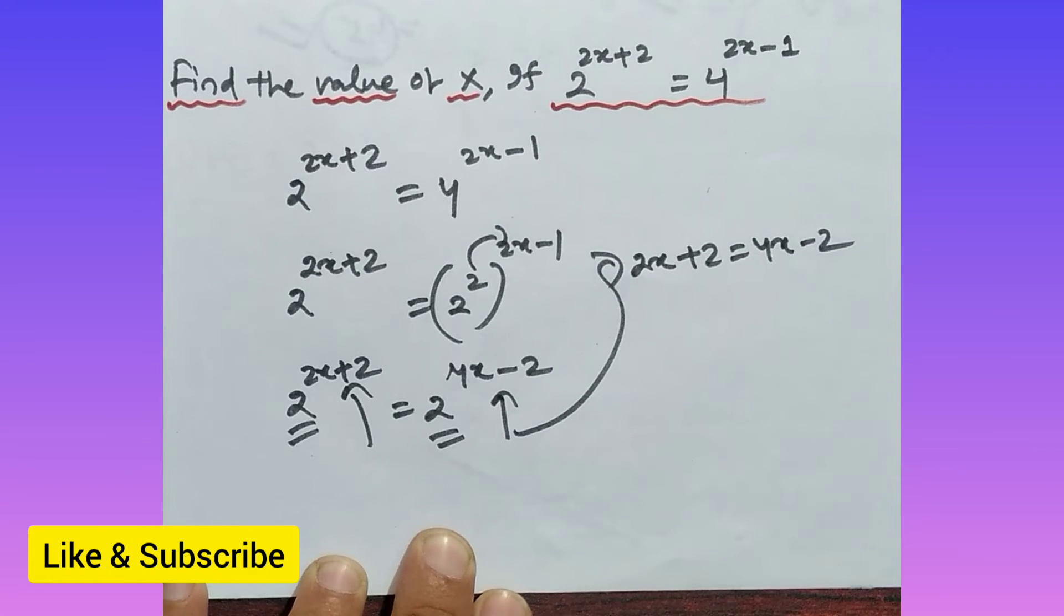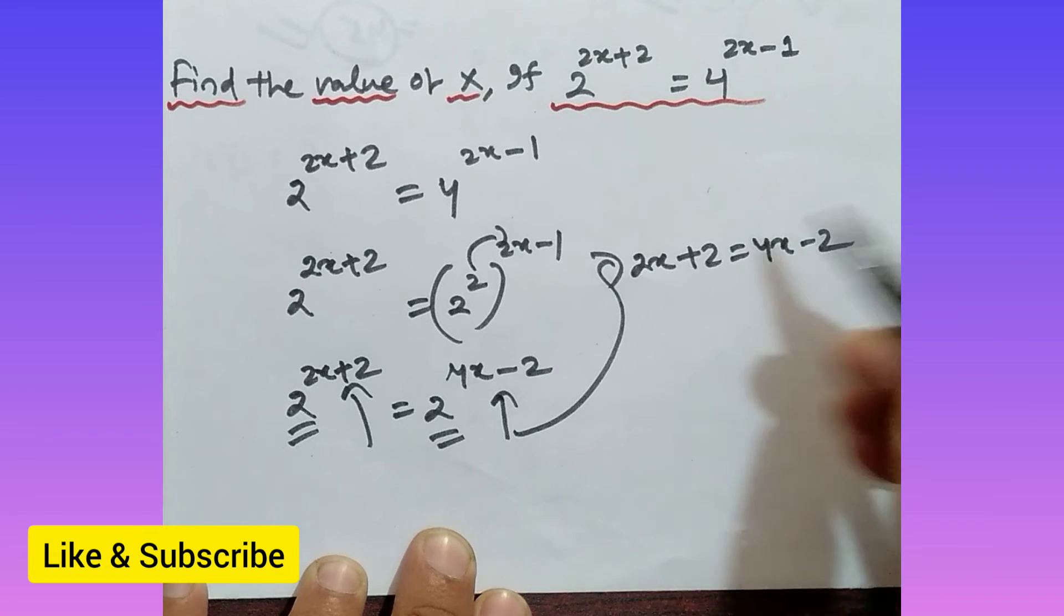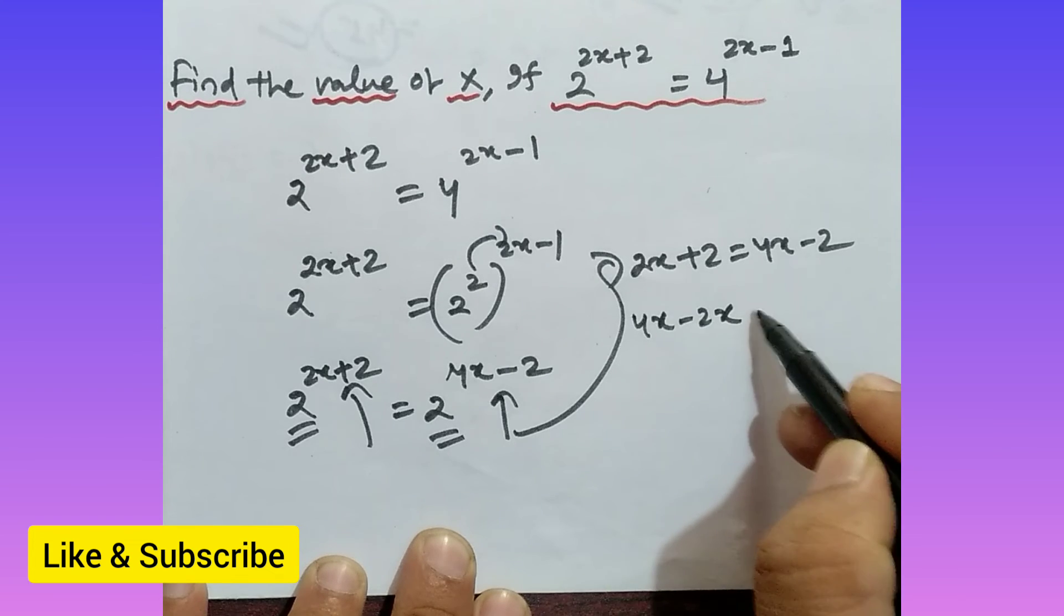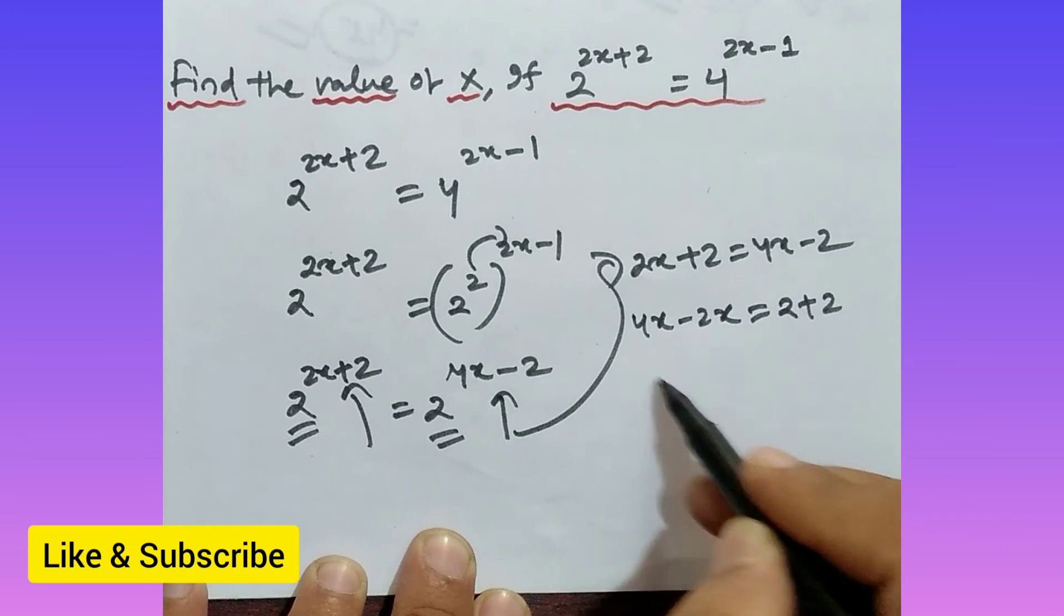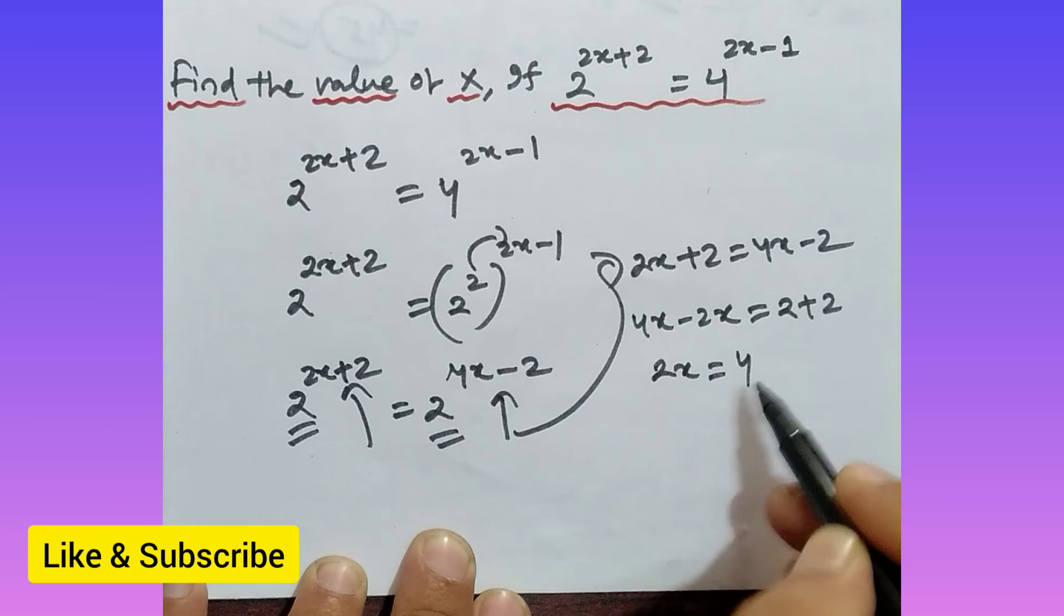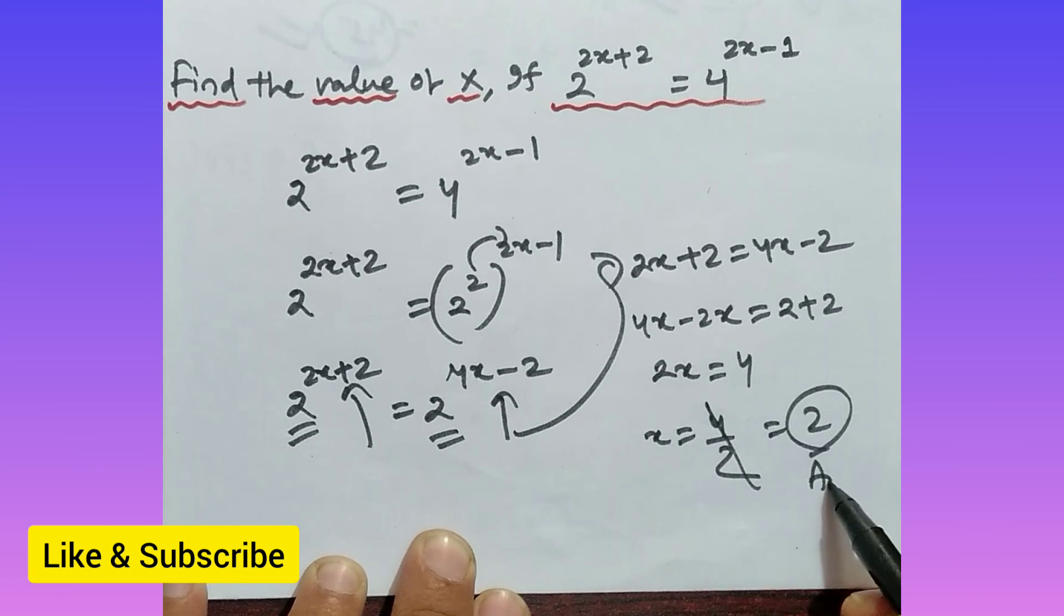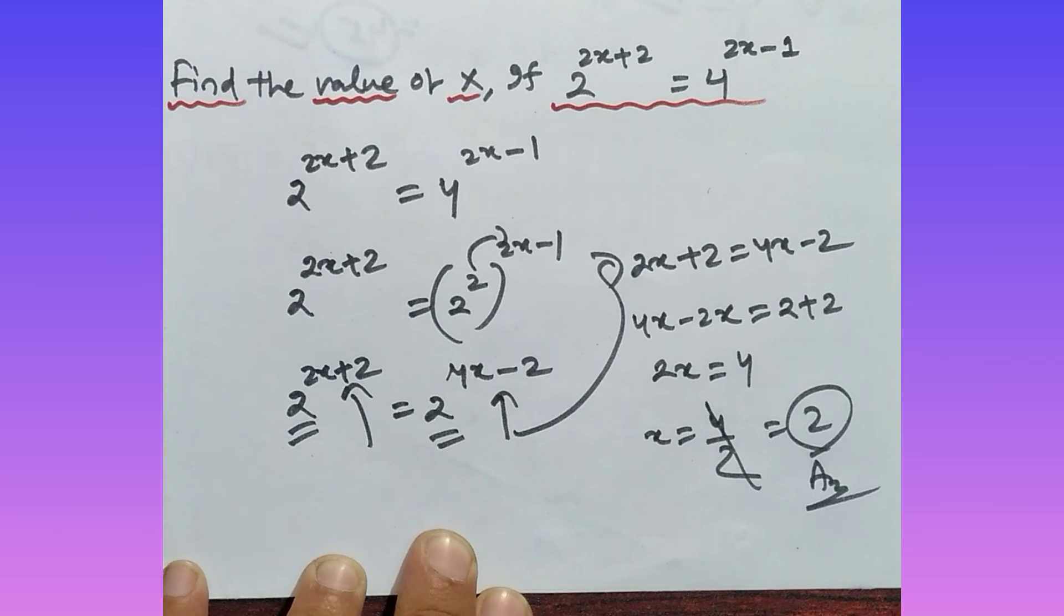After that, simplify it by using linear equation in one variable. Okay, very simple thing is that, just see how can I solve it. That is, you have to write 4x minus 2x, okay, is equal to what, that is 2 plus 2, right. It should be what, that is 2x is equal to what, 4, and x will be what, 4 by 2, so that is 2. So 2 is your answer. In this way you have to solve the value of x over there, right.